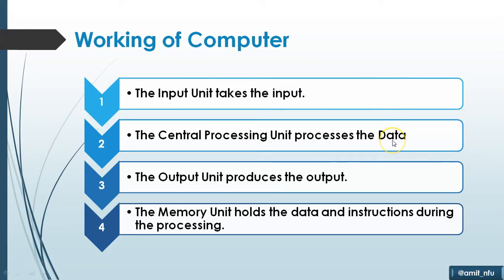The central processing unit, CPU, processes that data, and the output units like monitor and printer produce the output. Memory units, whether RAM, ROM, or hard disk, hold the data and instructions during processing.